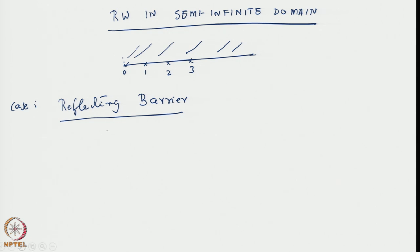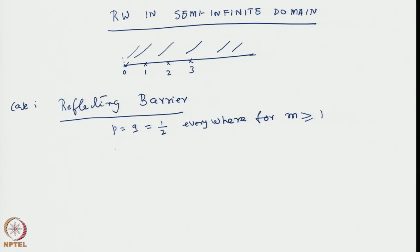A reflecting barrier means, as before, we talk of only symmetric random walk, which means p equal to q equal to half everywhere for m greater than or equal to 1. However, p becomes 1 and therefore q will be 0 for m equal to 0. So what it means is, whenever a particle lands at site 0 at the nth step, at the n+1 step it lands back at site 1 from which it came, with forward probability 1.